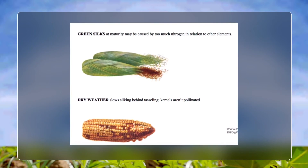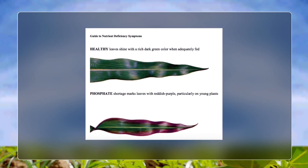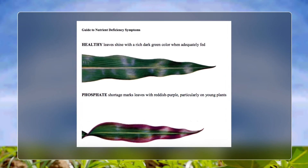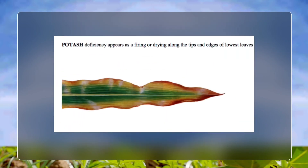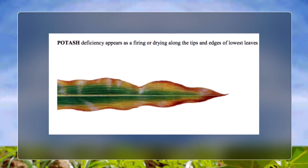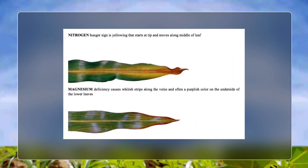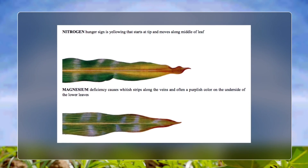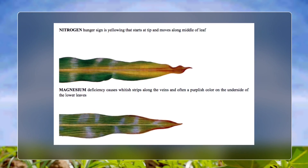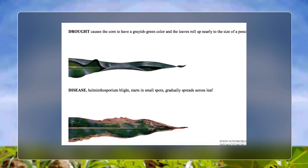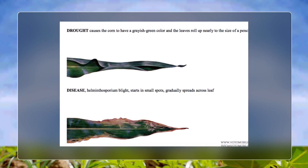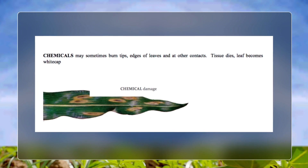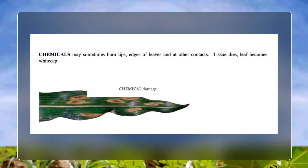Green silks at maturity may be caused by too much nitrogen relative to other elements. Dry weather slows silking behind tasseling, leaving kernels unpollinated. Guide to nutrient deficiency symptoms: healthy leaves shine with a rich dark green color when adequately fed. Phosphate shortage marks leaves with reddish-purple color, particularly on young plants. Potash deficiency appears as a firing or drying along the tips and edges of the lowest leaves. Nitrogen deficiency shows as yellowing that starts at the tip and moves along the middle of the leaf. Magnesium deficiency causes white strips along the veins and often a purplish color on the underside of lower leaves. Drought causes a grayish-green color and leaves roll up nearly to the size of a pencil. Helminthosporium blight starts as small spots that gradually spread across the leaf. Chemicals may sometimes burn the tips and edges of leaves; tissue dies and the leaf becomes white-capped.